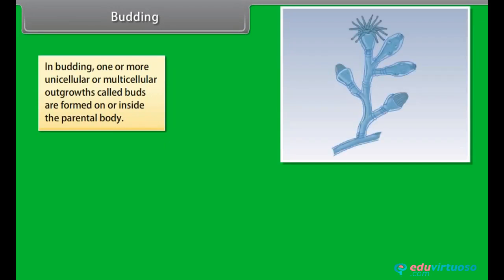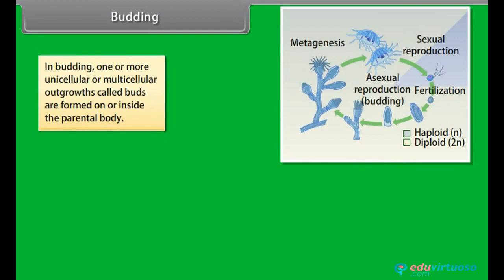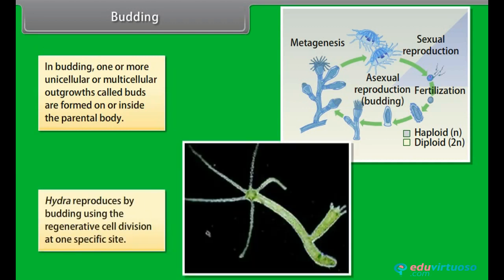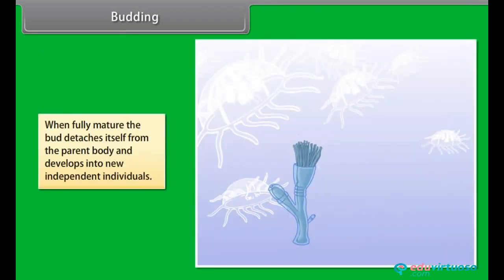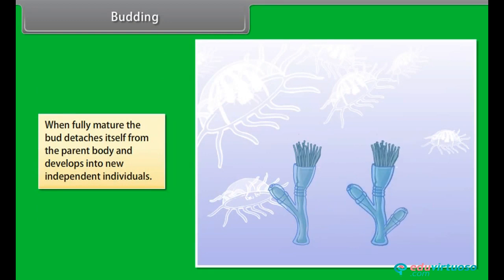In budding, one or more unicellular or multicellular outgrowths called buds are formed on or inside the parental body. Hydra reproduces by budding using regenerative cell division at one specific site. When fully mature, the bud detaches itself from the parent body and develops into a new independent individual.